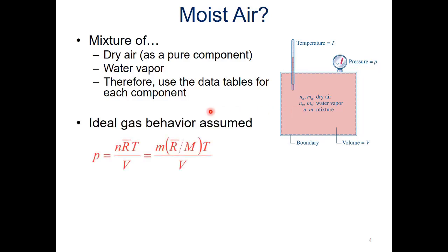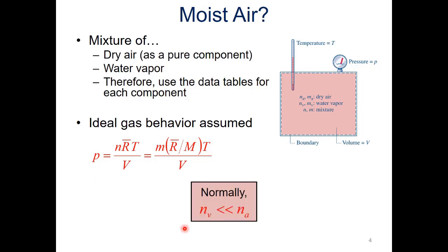We can use the data tables and we're also going to assume ideal gas behavior, so we can use P = nRT/V to calculate pressure, or on a mass basis we can use a specific gas constant. Normally when we look at this, the number of moles of vapor is much, much smaller than the number of moles of air in a given mixture. So while we do have vapor in moist air, the amount of it is very small relative to the dry air in our moist air sample.